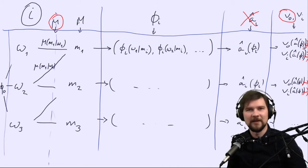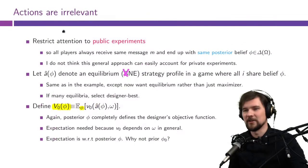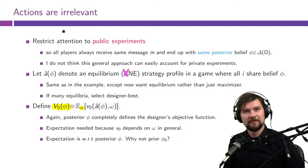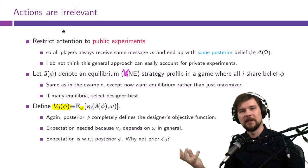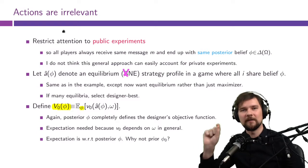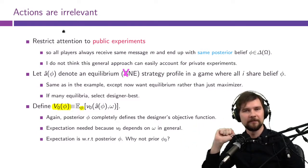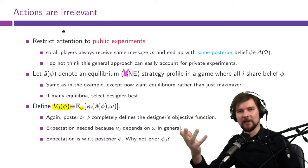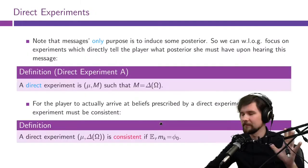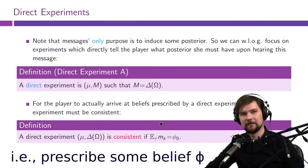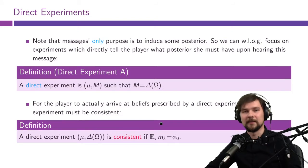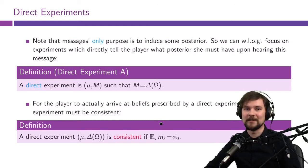We still have this step of designing any conceivable set of messages. We have a result in mechanism design that has been our salvation for a long time, called the revelation principle. We had basically the same problem — an infinite space of mechanisms, an infinite space of games to give agents to play. We said you don't need to look at all of that space; you only need to look at games in which every single agent reports their type. And that's it. We can do a similar revelation principle here.